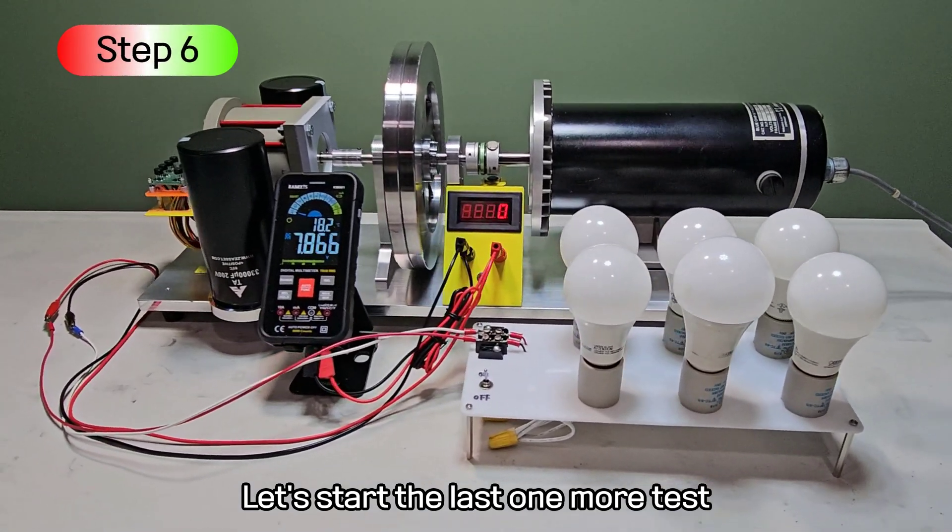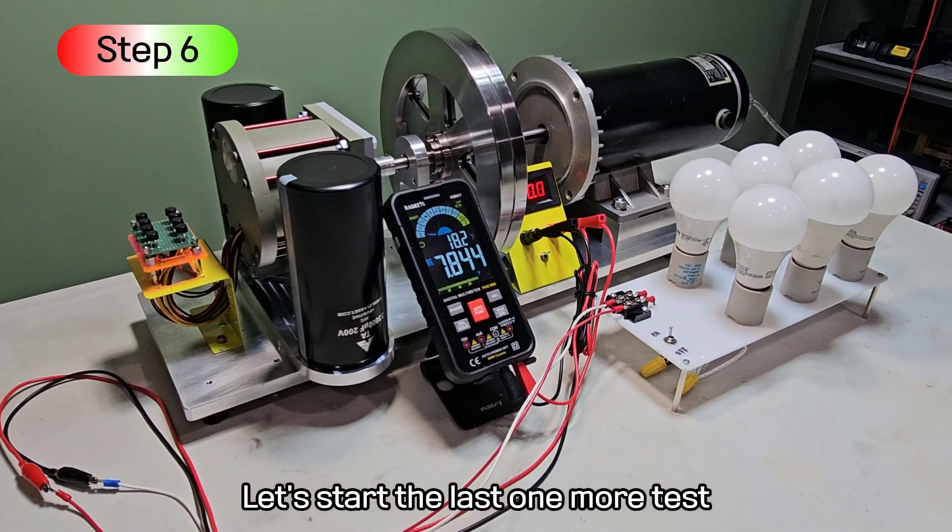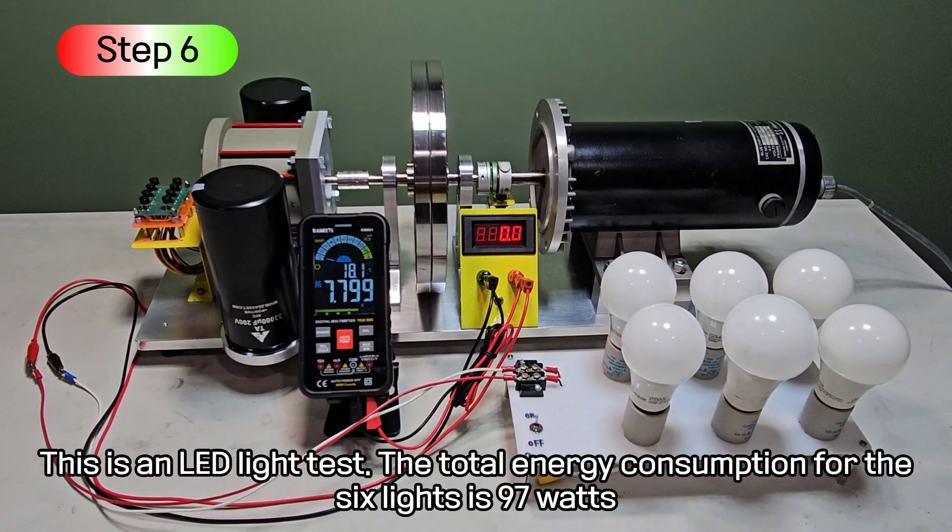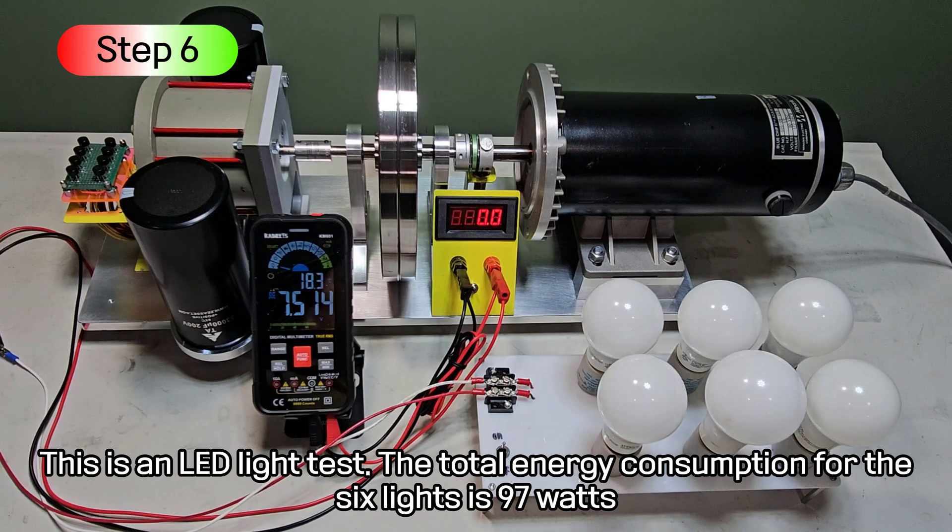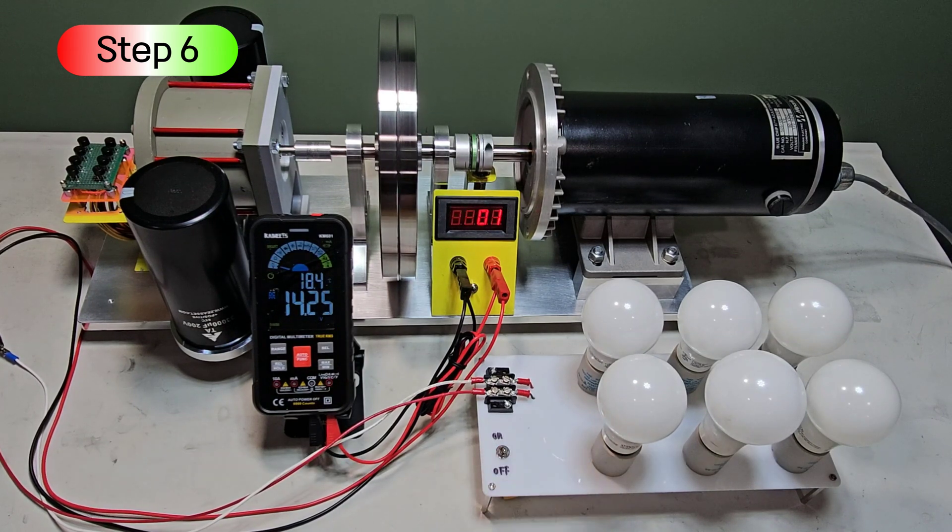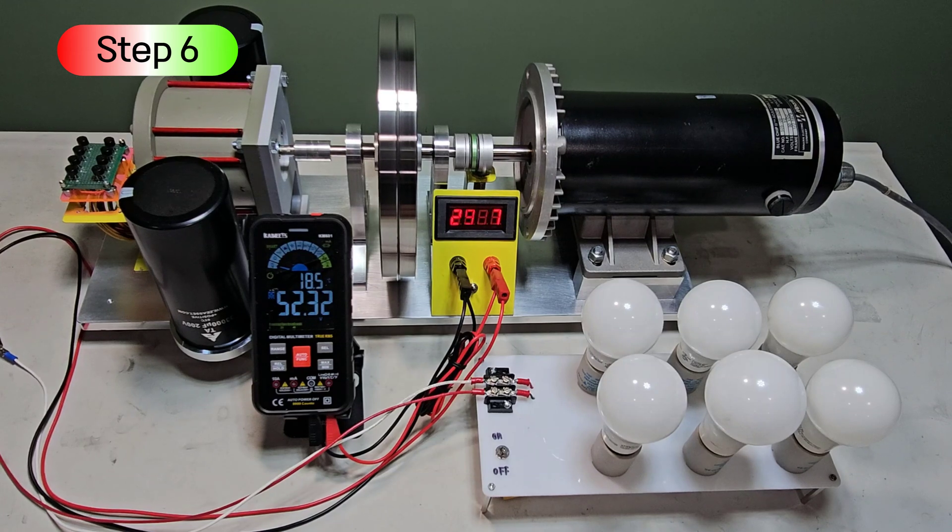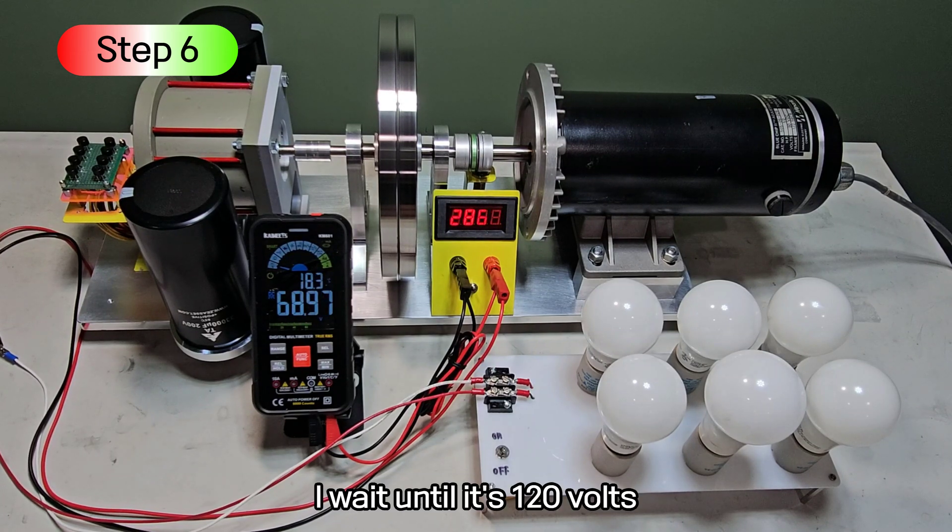Let's start the last one more test. This is an LED light test. The total energy consumption for the six lights is 97 watts. I wait until it's 120 volts.